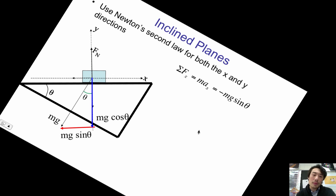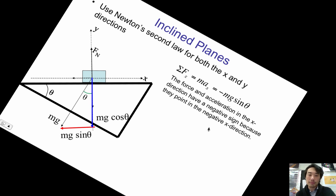And the only force that we see is this virtual component right here, which is mg sine theta. Now, I made it negative because it's going towards the left. You can make it positive if you want, but for me, my general rule of thumb is if it's going to the left, it's negative. The force and acceleration in the x direction, I have a negative sign because it's pointing in the negative direction.